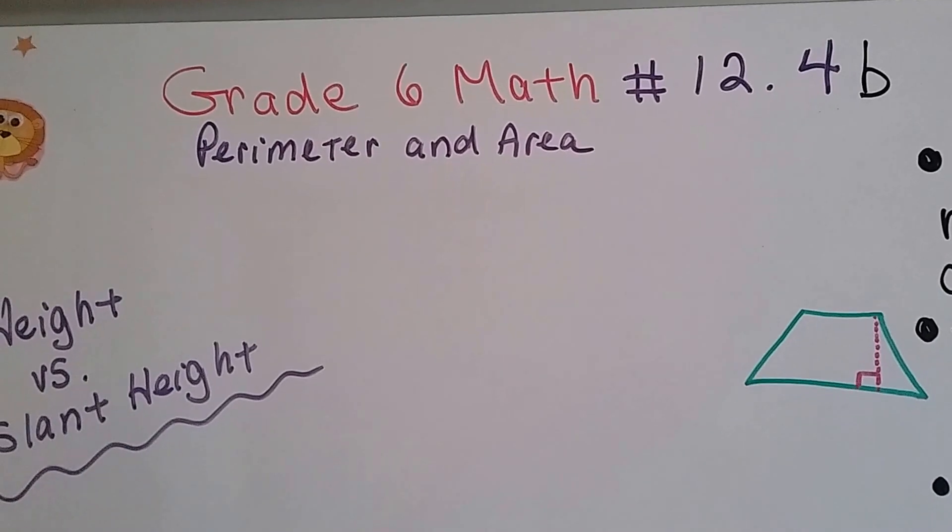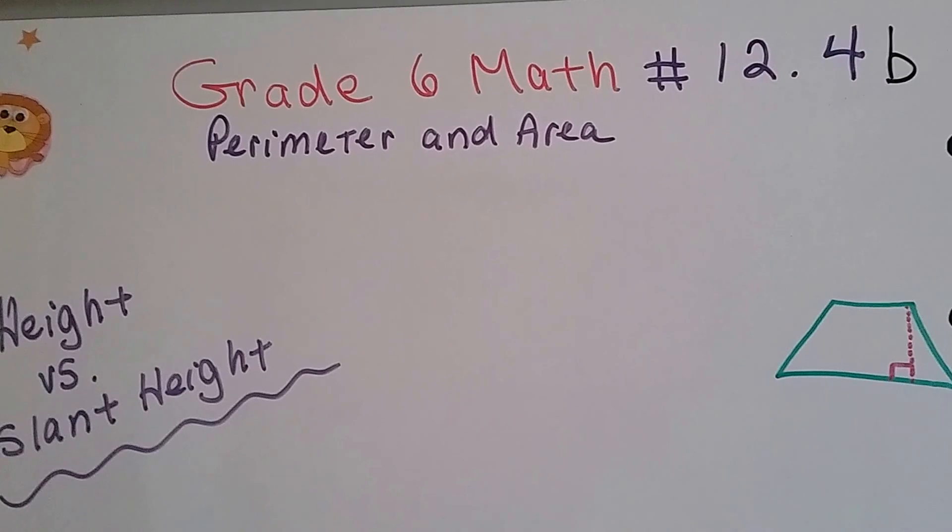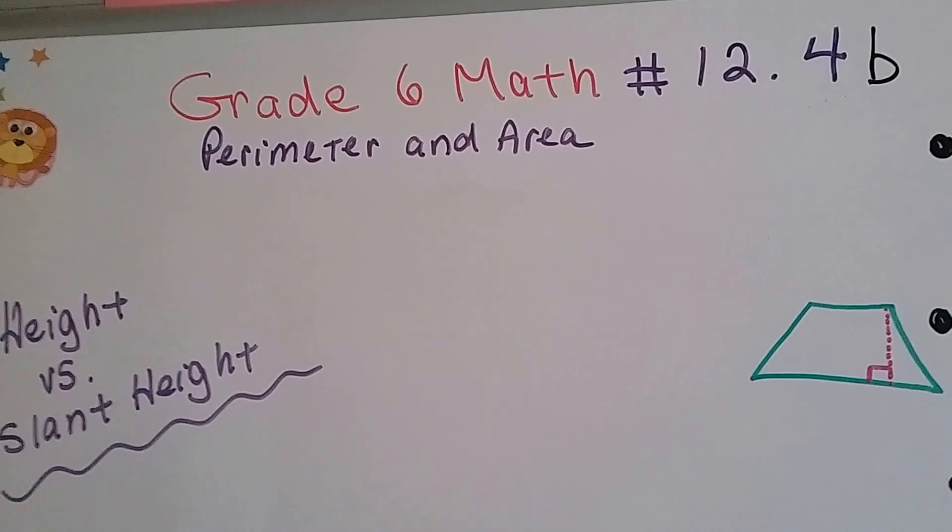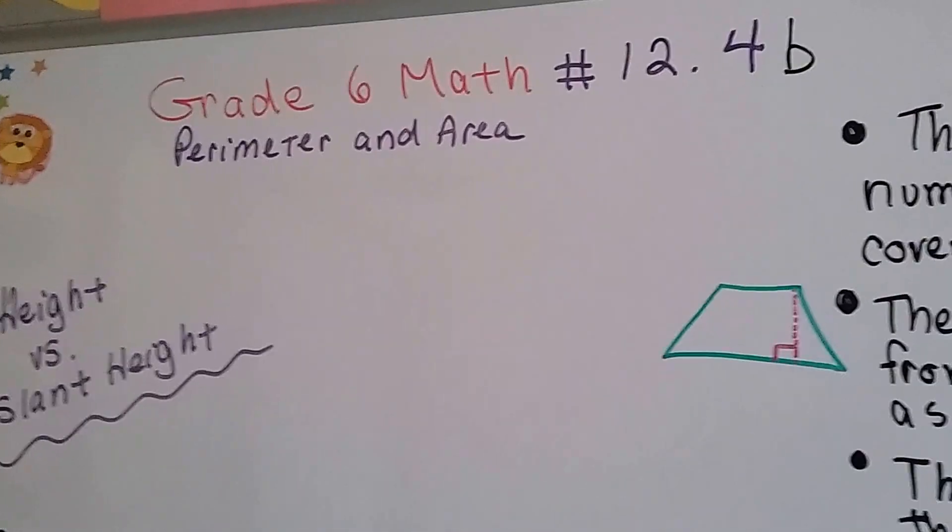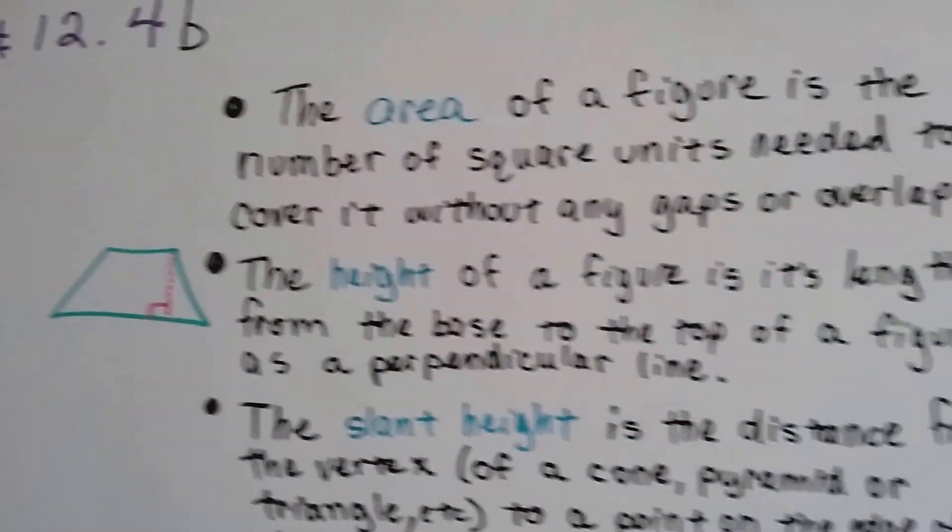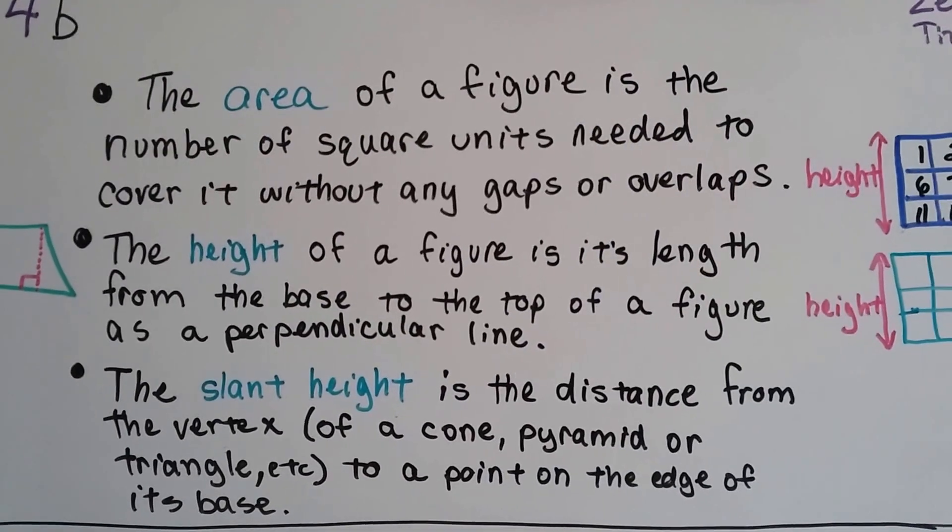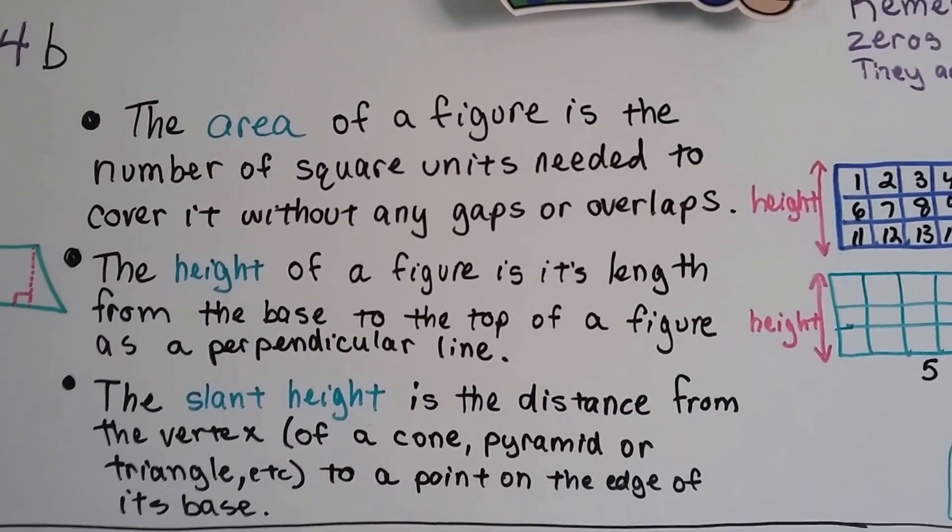Grade 6 math number 12.4b, height versus slant height. We're only dealing with 2D areas with perimeter and area right now, but I wanted to make sure you understood the height versus the slant height because you might get confused.